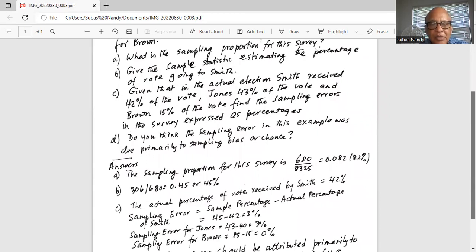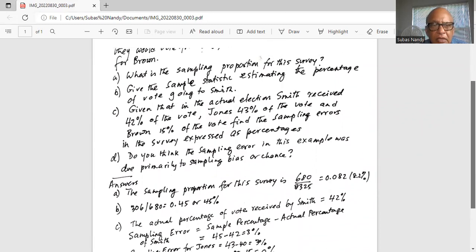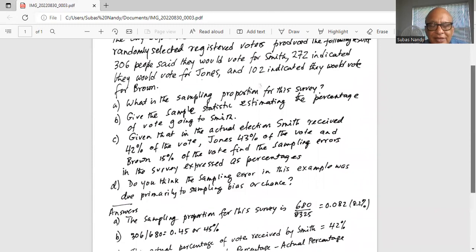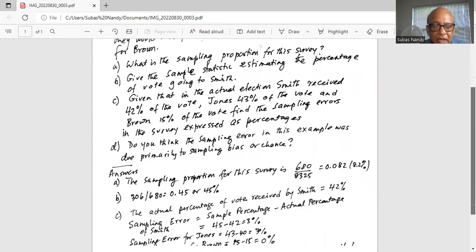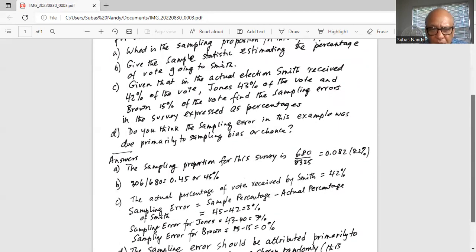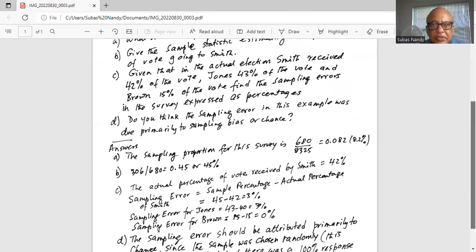Similarly, sampling error for Jones is 43 minus 40 percent. Where did we get the 40 percent number? It is 272 divided by 680.